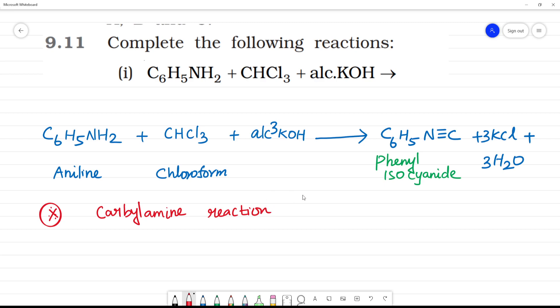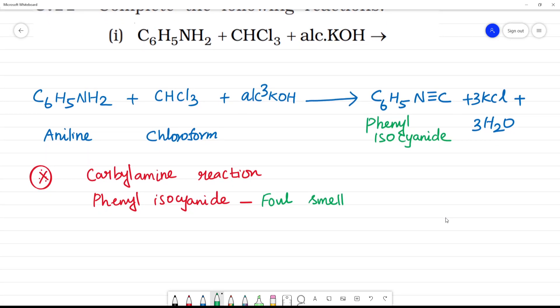Okay. So, this phenyl isocyanide is foul smelling. The main thing is, this reaction is used to differentiate primary amines with secondary and tertiary amines.